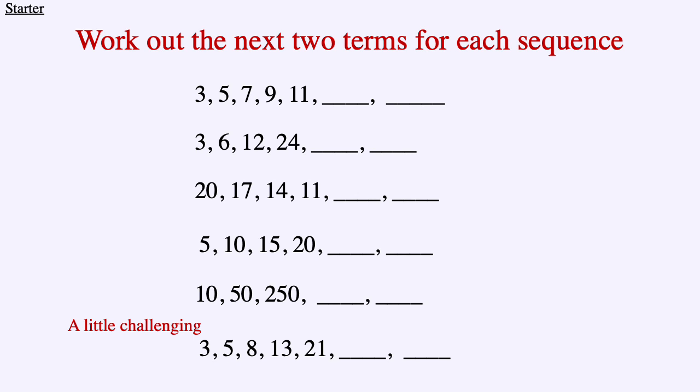For the first sequence we've got 3, 5, 7, 9, 11. The pattern was that we're adding two to each term to get the next term, so it would be 13, and then 13 plus 2 gives us 15.